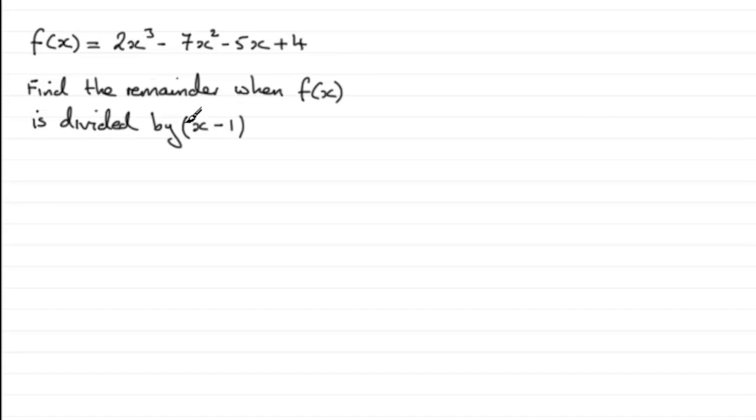If we're to divide something by, say, x - 1 and work out what that remainder is, all we need to do is put this equal to 0. If we did x - 1 equals 0, x would equal 1. And that means that we get the remainder when we do f(1). If you're unsure of this, just go on my website and have a look at the tutorials on the remainder theorem.